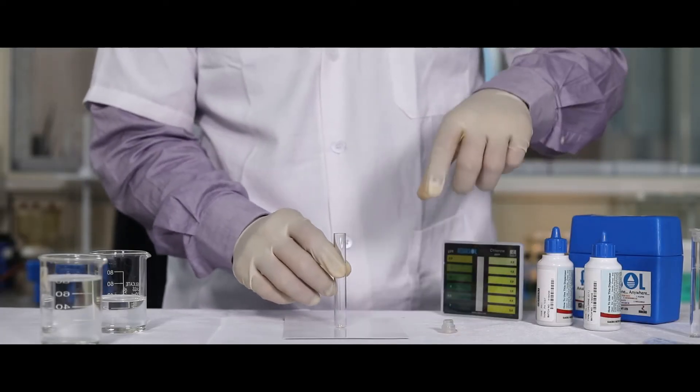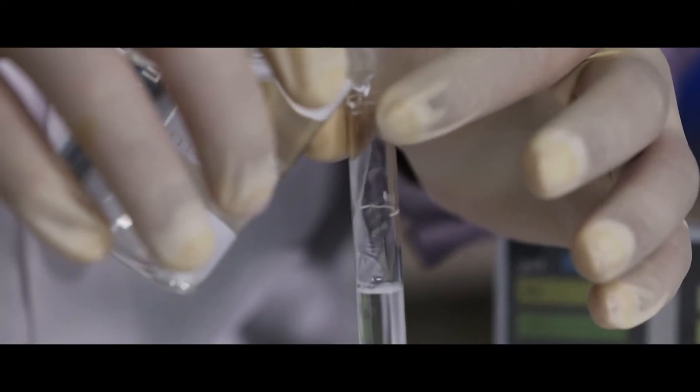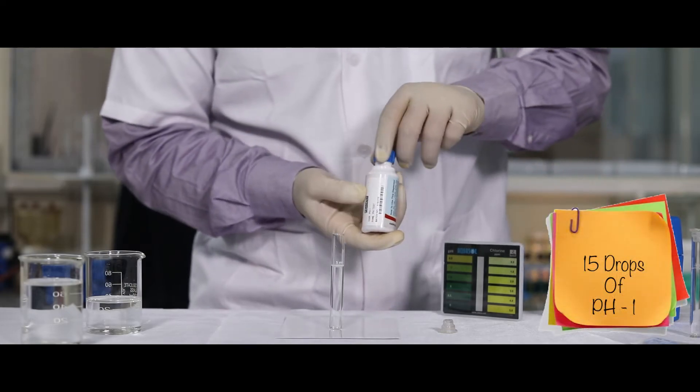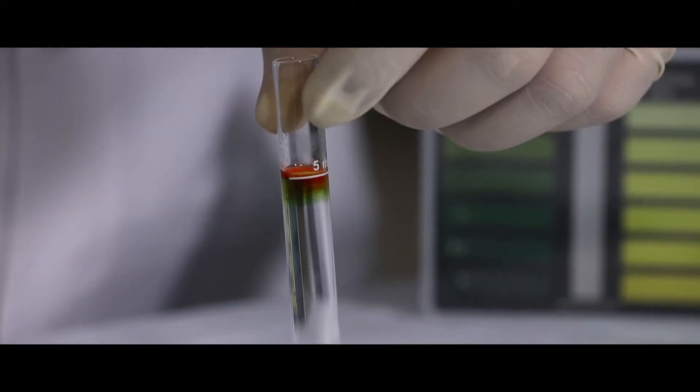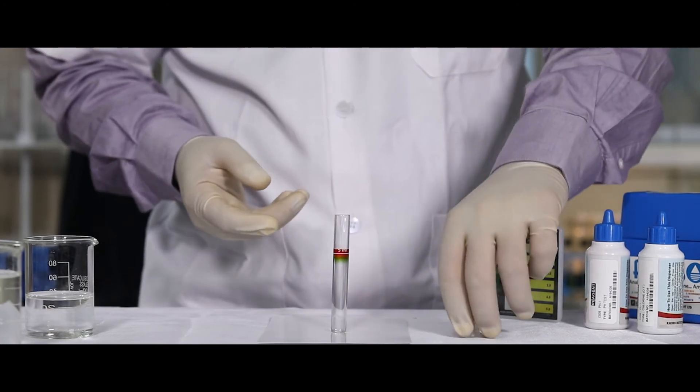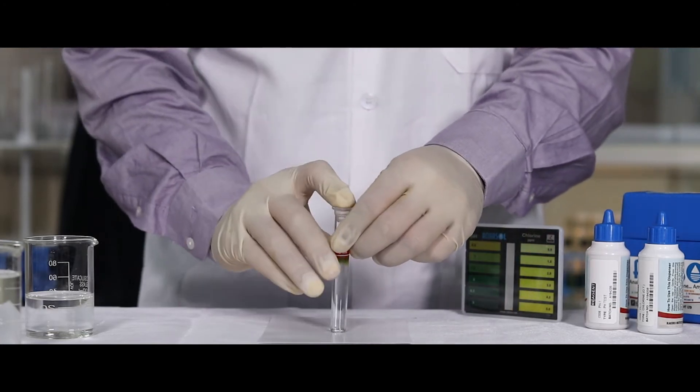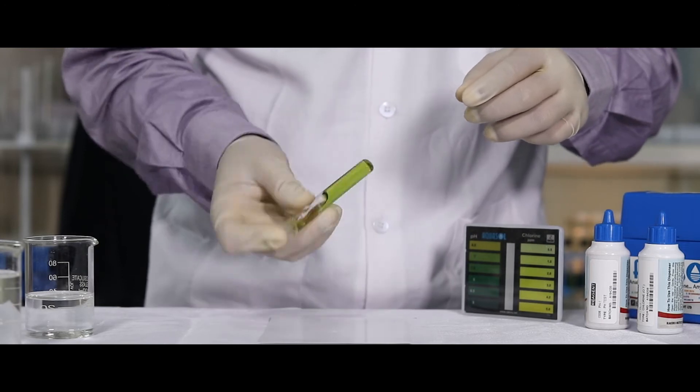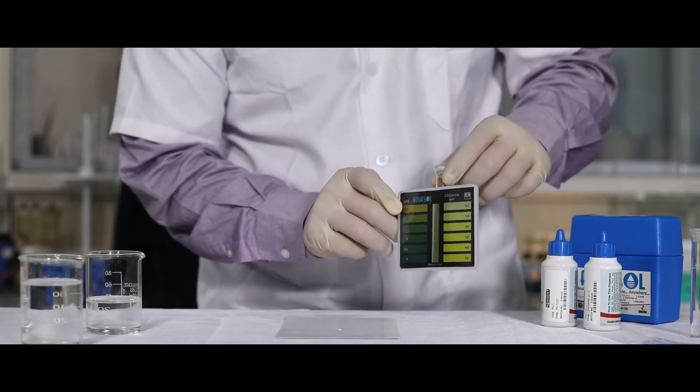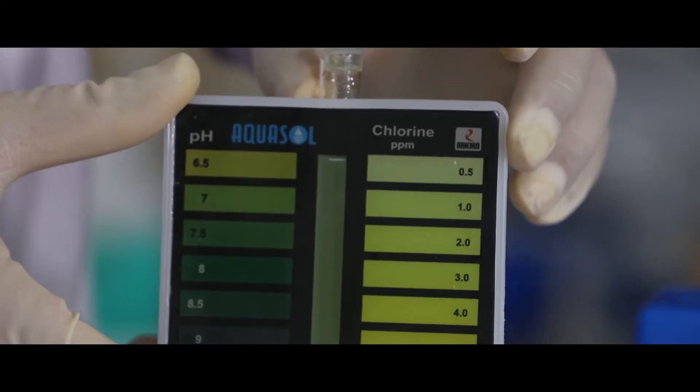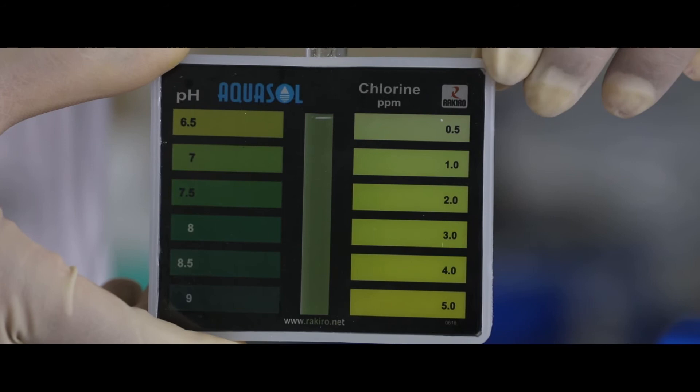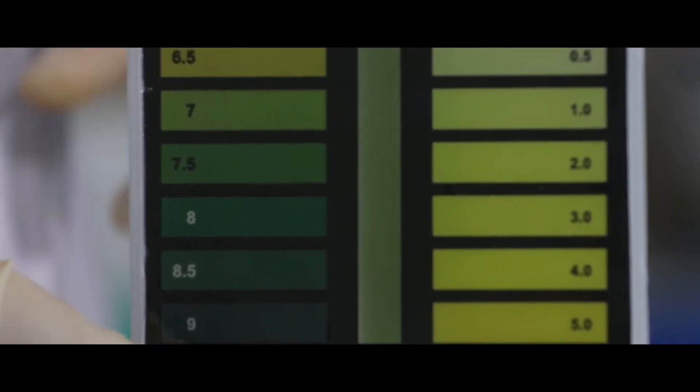Take the comparator tube provided, fill the tube with the sample up to the mark, and add 15 drops of pH-1 reagent. Close the cap and mix well. Place the test jar in the comparator slot and match the color to the color shade to know the value of pH. Hold the comparator vertically against the light at eye level.